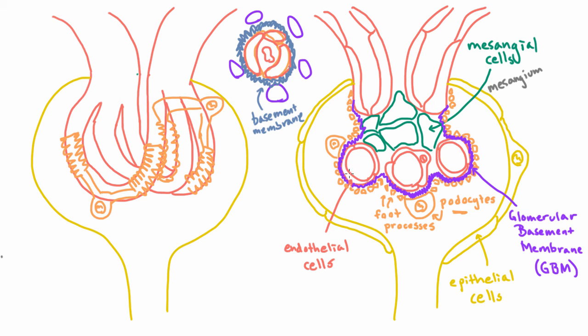But one important thing to realize here, one result of this structure, is that for something to get from the capillary to Bowman's space, so in other words, for something to be filtered, it needs to go through three layers.